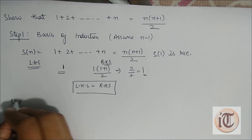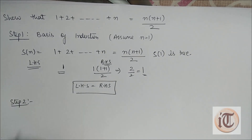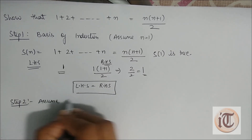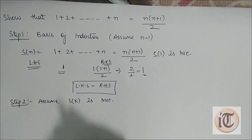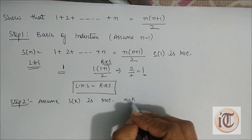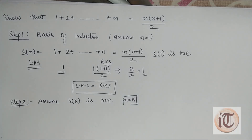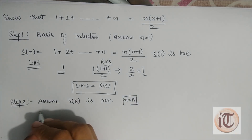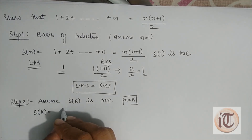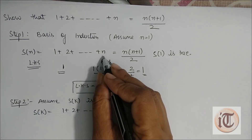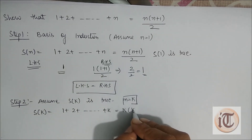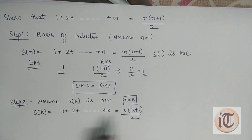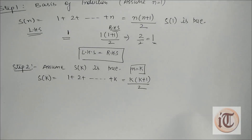Step 2 is the induction hypothesis. We assume that S(k) is true, meaning we put n = k and assume the statement is true. So the statement becomes: 1 + 2 + ... + k = k(k+1)/2. We assume this statement S(k) is true. With the help of this assumption, we proceed to Step 3.